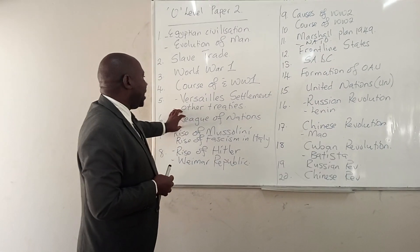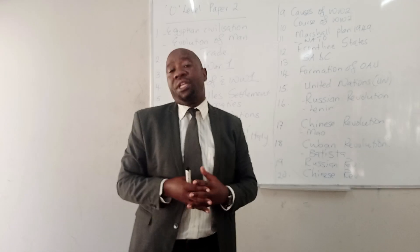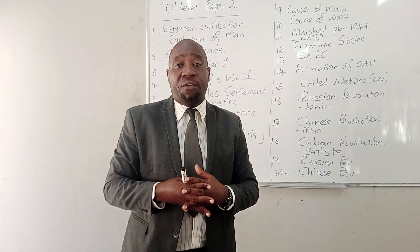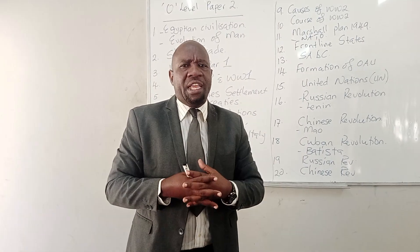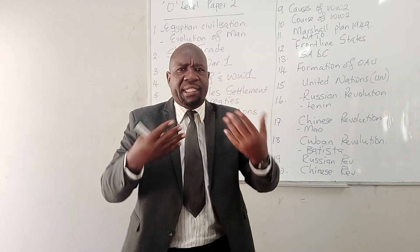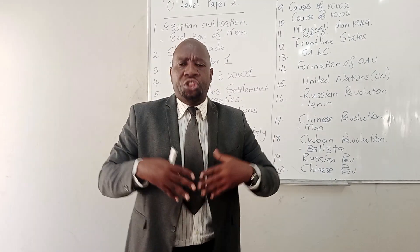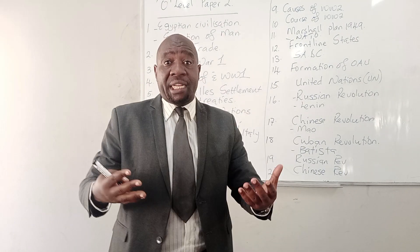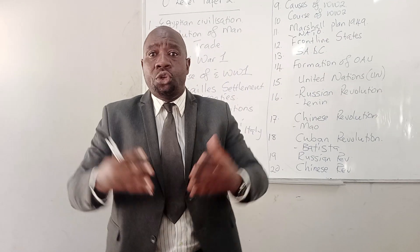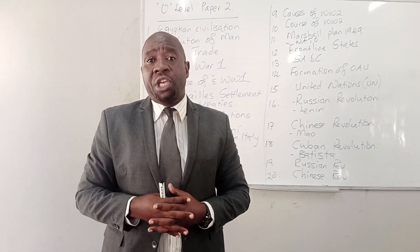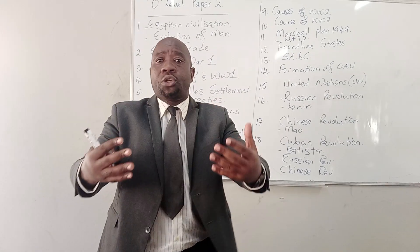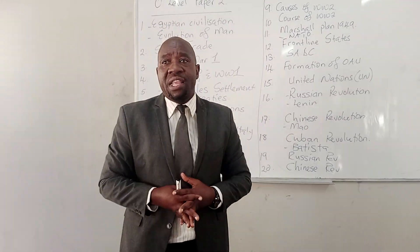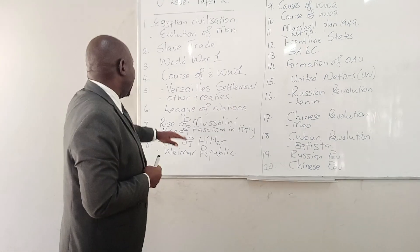On number six, they can ask you a question on the League of Nations — the aims of the League of Nations, the structure of the League of Nations: the assembly, the council, the International Labour Organization, and the secretariat. A question might come asking you on the organs of the League. They can also ask you about the successes and the failures of the League of Nations.